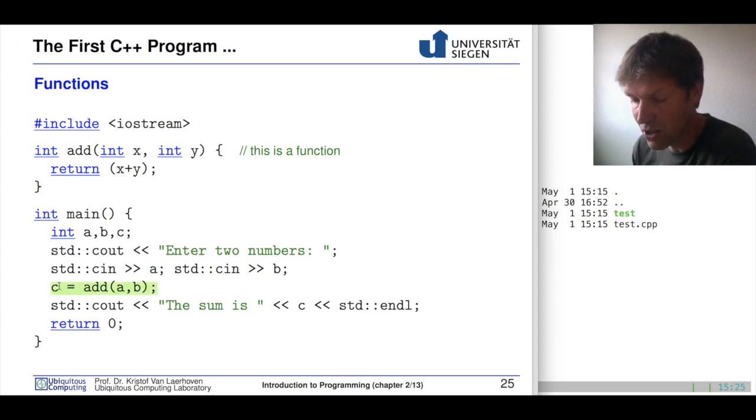So here you see that we have an integer c. The c is then assigned to whatever add as a function returns when a and b are given as the arguments or the parameters to this function. So what happens here when you type this whole thing in your terminal, for instance, is that you can enter the two numbers a and b. Then our function then adds those two and returns that as a c variable or into the c variable. And this can then be written out by this mean. So the sum is, and then you see here, what c is.